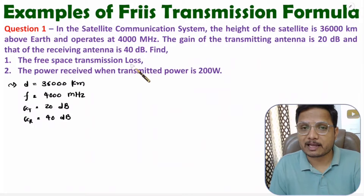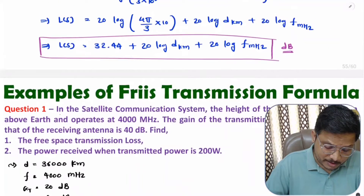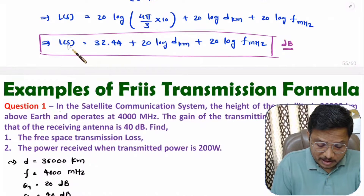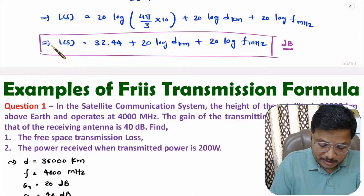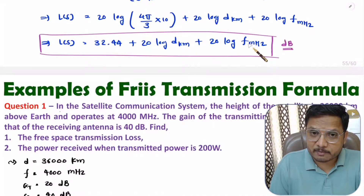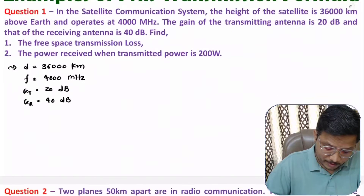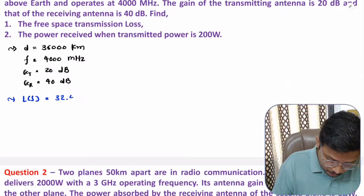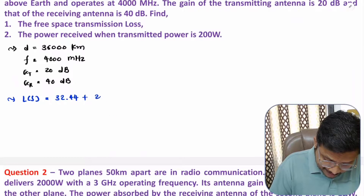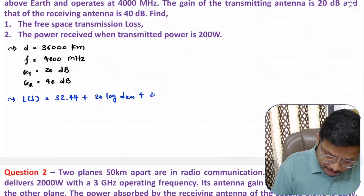The first thing to find is the free space transmission loss. As I explained in my last video, free space transmission loss is: 32.44 plus 20 log(distance in kilometers) plus 20 log(frequency in MHz). Using this equation we can easily solve for free space transmission loss.